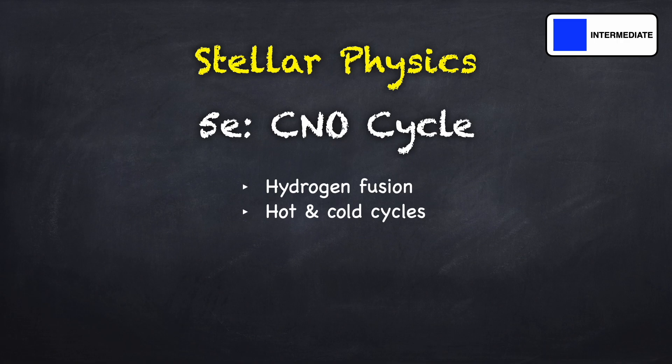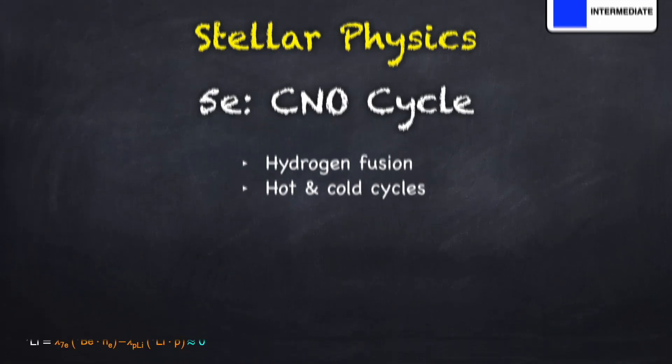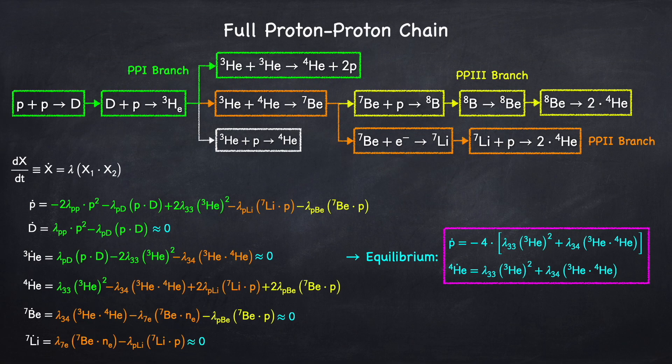I've rated the physics level in this video as intermediate. Before we get to the CNO cycle, in the previous video, Stellar Physics 5d, I went over the other mechanism that fuses hydrogen into helium, called the proton-proton chain. This chain has three main branches.